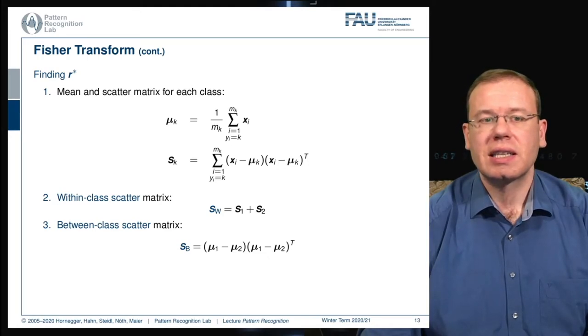It's essentially slightly more complex if you want to go towards more classes, then you end up with the inter- and intra-class covariance matrices.